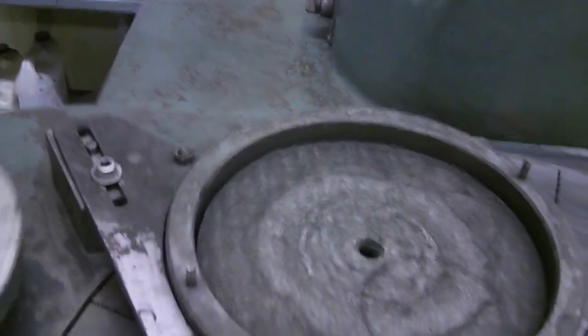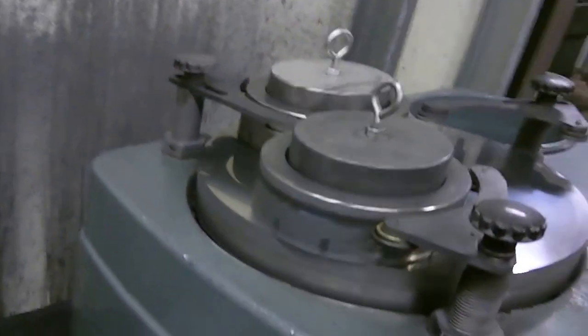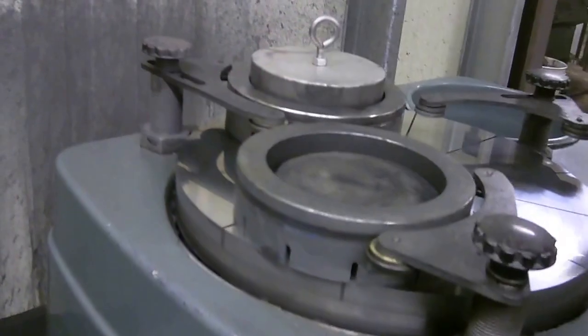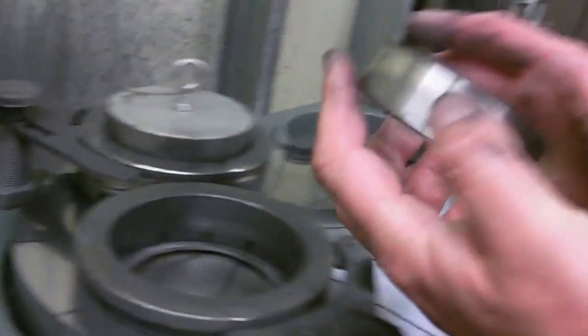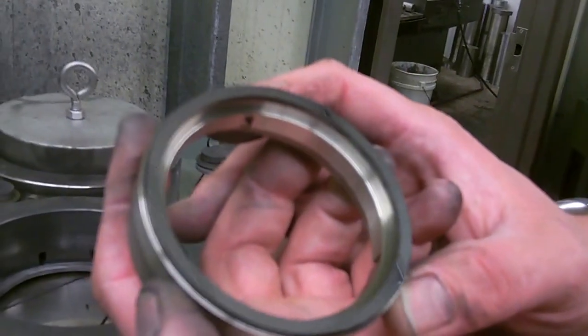So from that step, we'll go over here to this machine. And once it's run through, we'll come back and polish it. We're just using a different machine. And you'll notice you'll get a mirror finish.